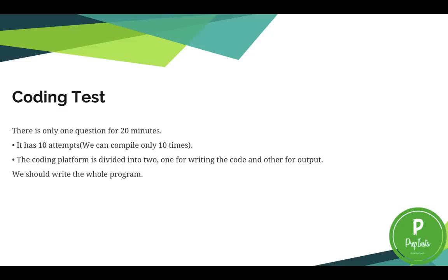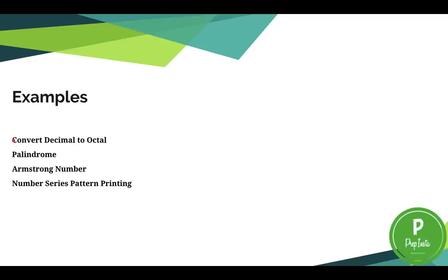In the coding test, you can use C, C++, Perl, Java, or Python — no command-line programming required. You get 20 minutes and 10 attempts to compile the program. The coding platform is split into two panels: one for writing the code and one for the output. You must write the whole program. Sample coding question topics include: decimal to octal conversion, palindrome, Armstrong number, number series, and pattern printing.